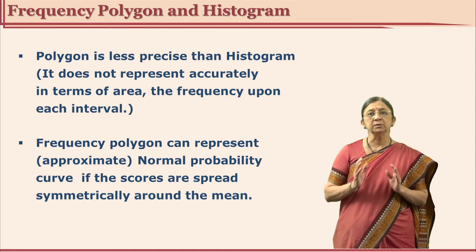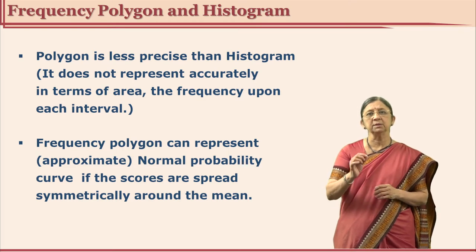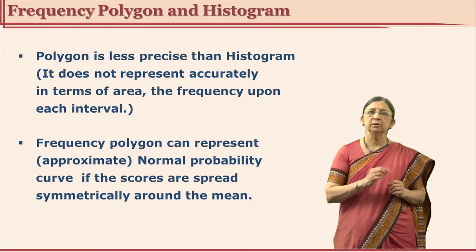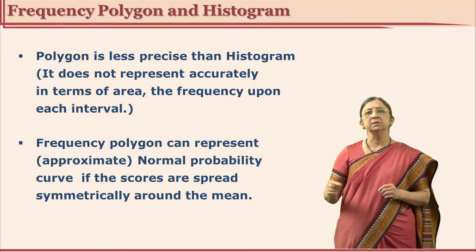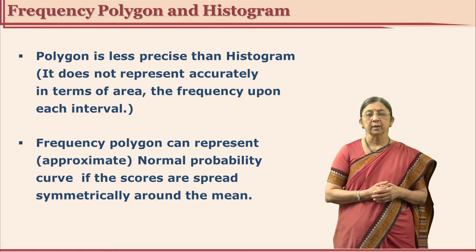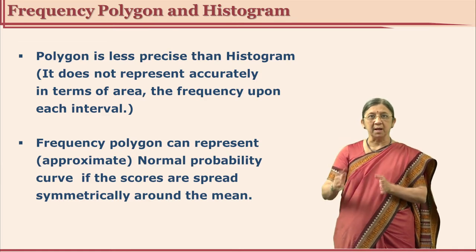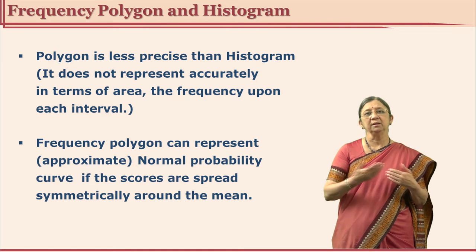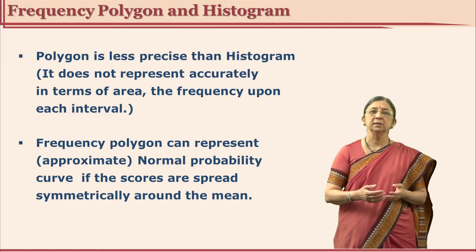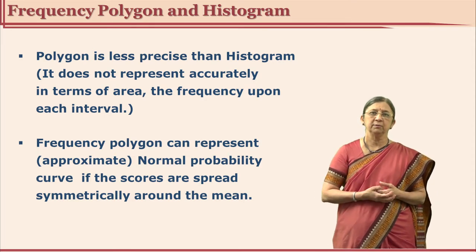We have already seen that histogram is accurately showing your area because the frequencies are perfectly taken care of. In a frequency polygon the frequency is written but it is not correctly represented, but it looks better compared to histogram. Histogram has bars touching each other; visually frequency polygon looks better. So if you are not interested in accuracy of the area covered, then instead of histogram you can use frequency polygon.